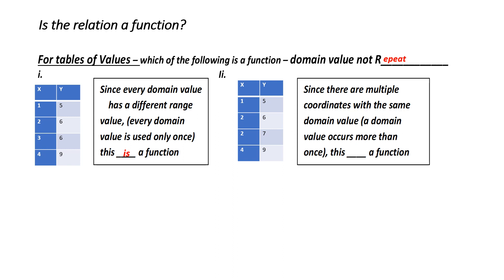Look at my second example. My domain values are 1, 2, 2, 4. So, what do I have? I have two 2s, or one of my domain values repeats. Therefore, the value 2 has two different possible answers of 6 and 7. Therefore, this isn't a function.